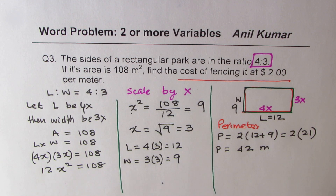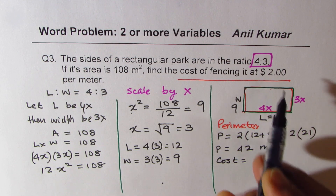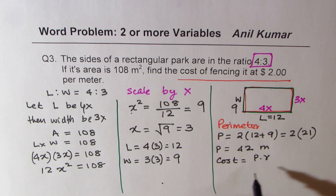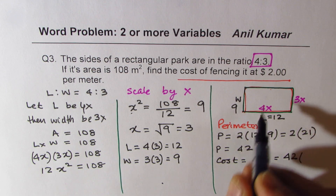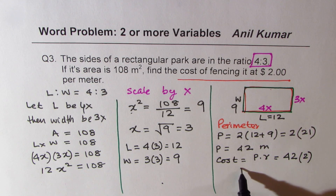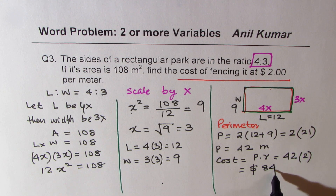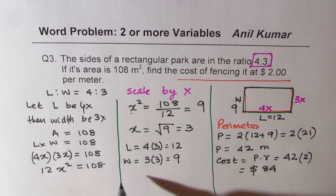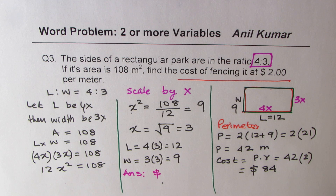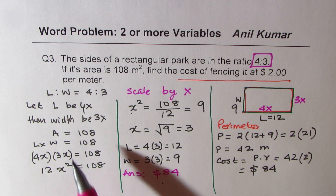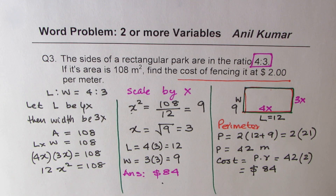Now comes the cost of fencing. Since the rate is given as $2 per meter, we multiply by the rate: perimeter times rate. The perimeter is 42 and the rate is 2, so we multiply 42 by 2, which gives us $84. So the cost of fencing is $84. I hope you understand all these steps. This is a question which involves multiple steps, but if you do it in sequence, you can solve it very easily. Don't be in a rush.